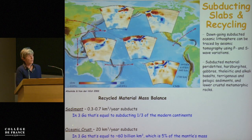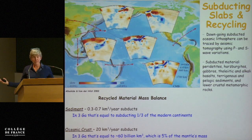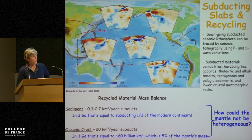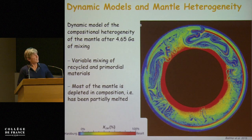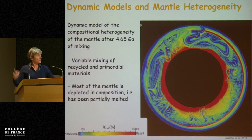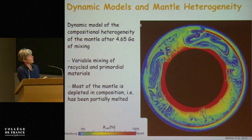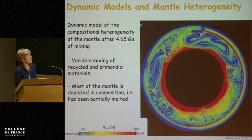All this material is more heterogeneous and has a wider elemental composition than the mantle, so the mass balance works. It's not surprising that the mantle is very heterogeneous. There are dynamic models for mantle heterogeneity where you combine what is recycled with primary heterogeneities — 4.6 billion years of mixing — that's the model of Ballmer et al., and you end up with such models.